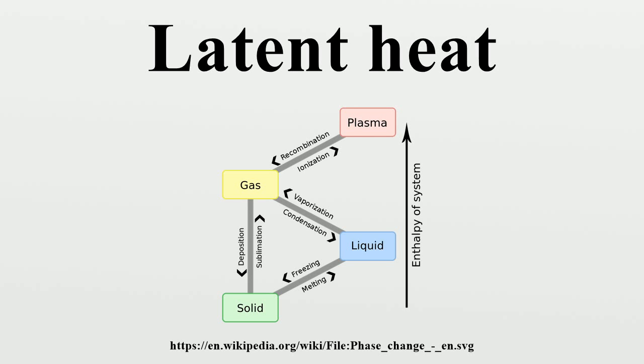Two common forms of latent heat are latent heat of fusion and latent heat of vaporization. These names describe the direction of energy flow when changing from one phase to the next, from solid to liquid, and liquid to gas.